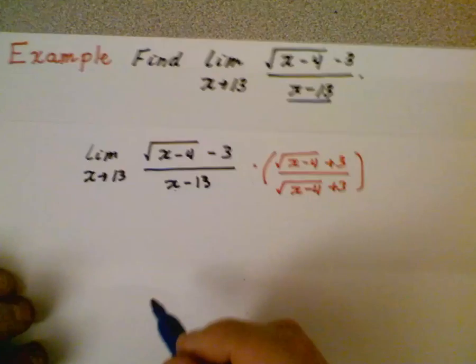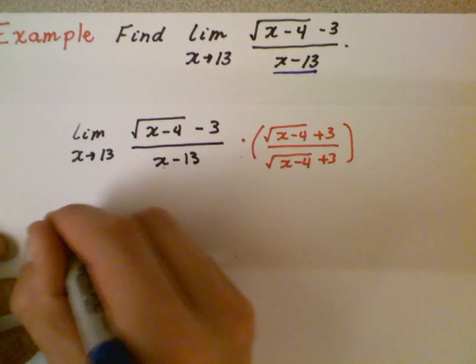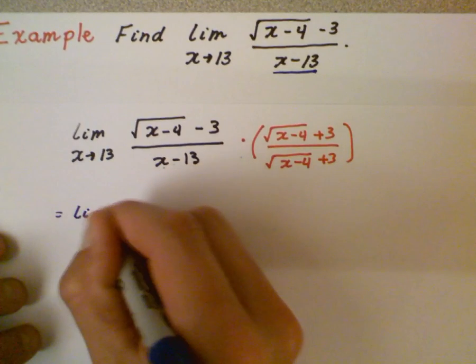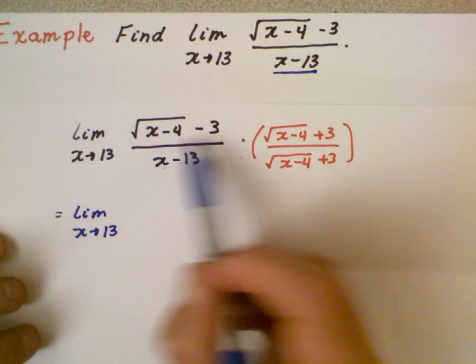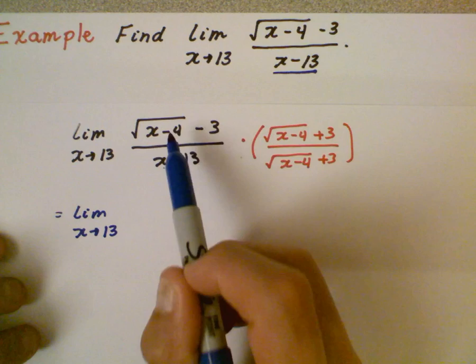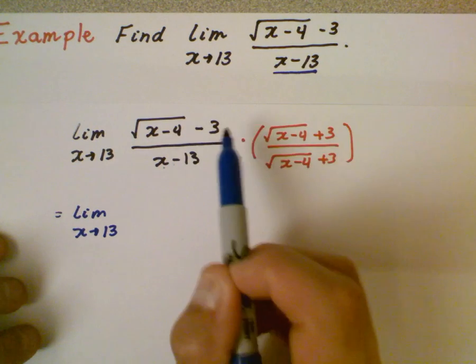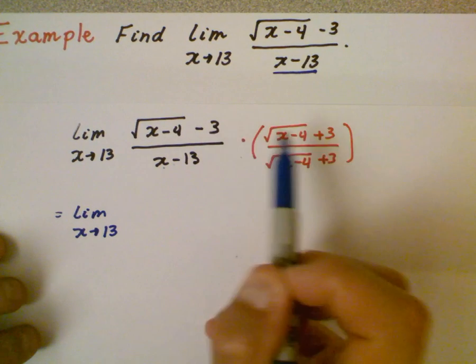So now I'm going to go ahead and just multiply the top out using a lot of people say foil, distributed property, this times this, this times here, negative 3 times this and here.